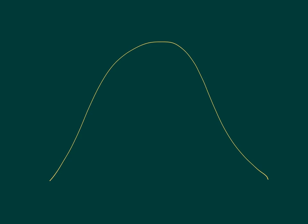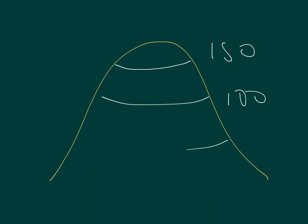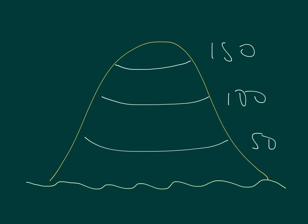Contour lines are very simply a line on the map where the height above sea level is exactly the same. So, if I were to draw a hill and draw some contour lines on it, right here would be 150 metres, here would be 100 metres, here would be 50 metres, and there's the sea. The contour line follows exactly where it is 100 metres above sea level, 50 metres, and 150 metres.